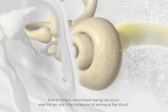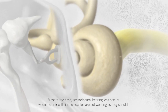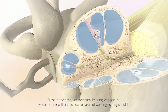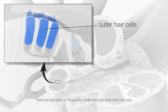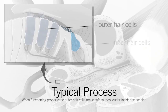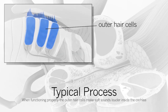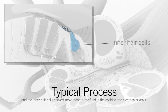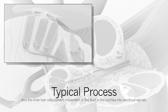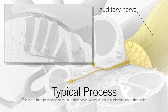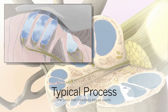Most of the time, sensorineural hearing loss occurs when the hair cells in the cochlea are not working as they should. There are two types of these cells: outer hair cells and inner hair cells. When functioning properly, the outer hair cells make soft sounds louder inside the cochlea, and the inner hair cells convert movement of the fluid in the cochlea into electrical signals. These are then passed on to the auditory nerve, which sends this information to the brain, which then interprets this as sound.